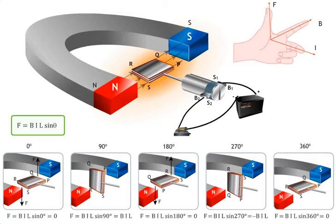On completing one full rotation, the split ring S1 connects PQ once again to carbon brush B1. Similarly, S2 connects RS to B2. Thus, as long as the coil is connected to a battery, it continues to rotate and convert electrical energy into mechanical energy.